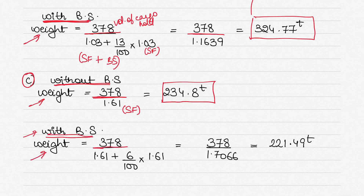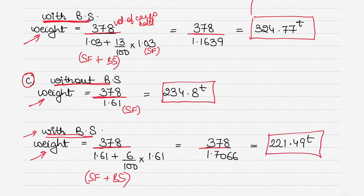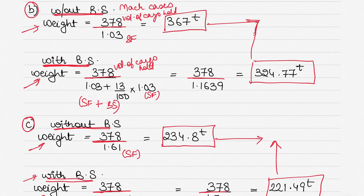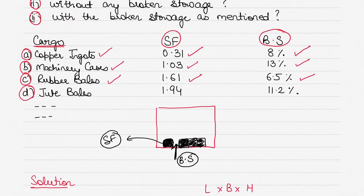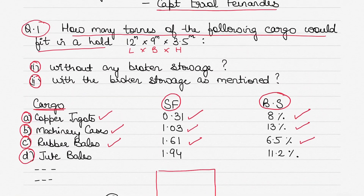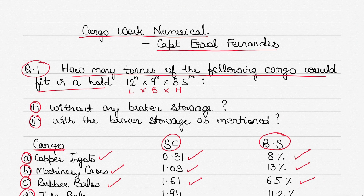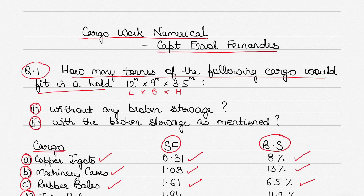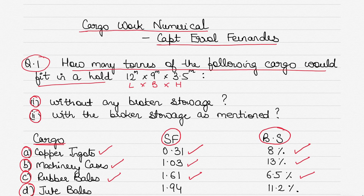With broken stowage for rubber bales, the weight is: volume of cargo hold ÷ (stowage factor + broken stowage percentage of stowage factor). Again, you can see that cargo loaded without broken stowage is more than with broken stowage — the same cross-check applies. If you have the book, you do the same for every cargo listed. This is one of the basics of cargo work numericals covering stowage factor and broken stowage.